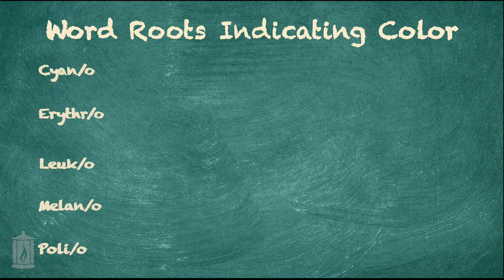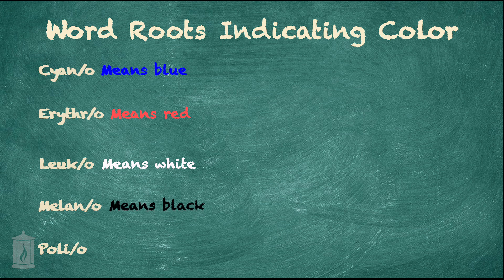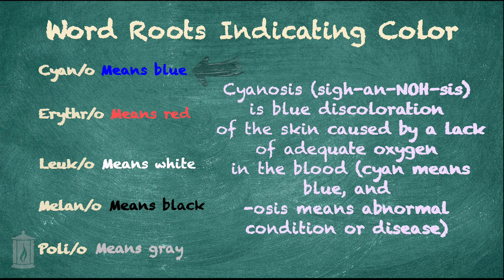Root words can also indicate color: cyan means blue, erythro means red, leuco or leuko means white, melano means black, and poly or polio means gray. For example, cyanosis is the blue discoloration of the skin caused by a lack of adequate oxygen in the blood. Cyan means blue and -osis means an abnormal condition or disease.